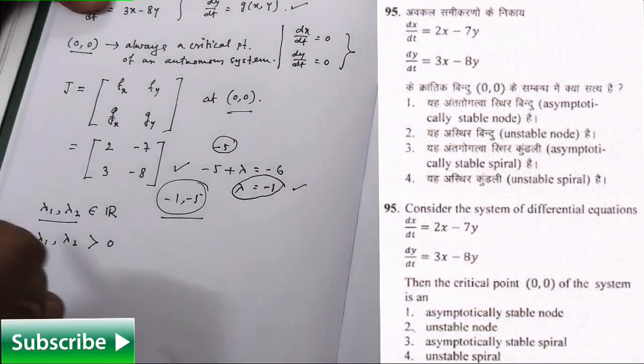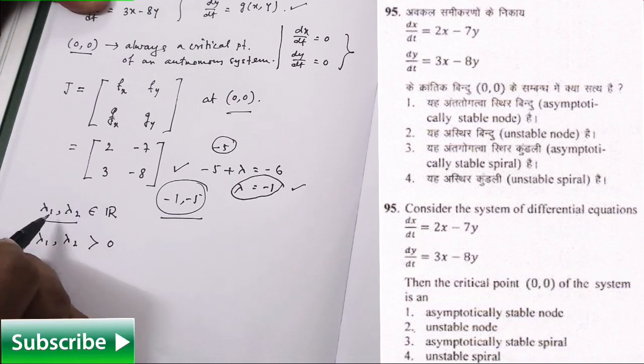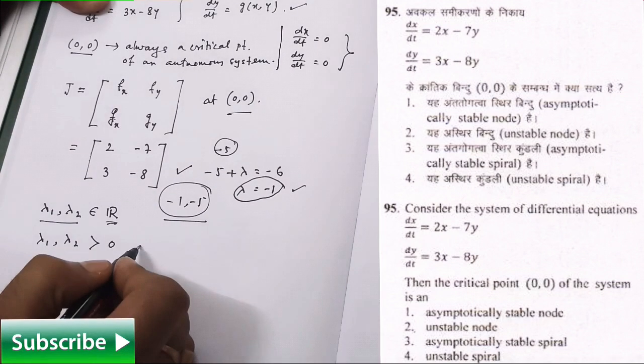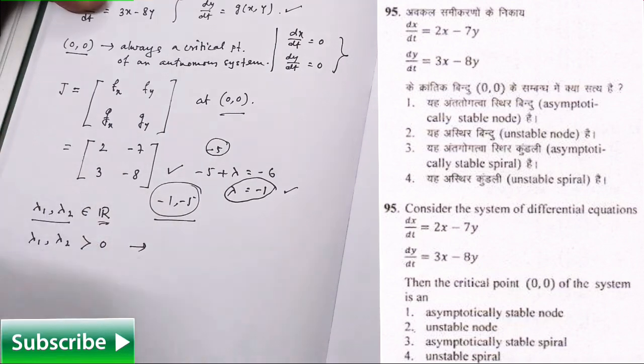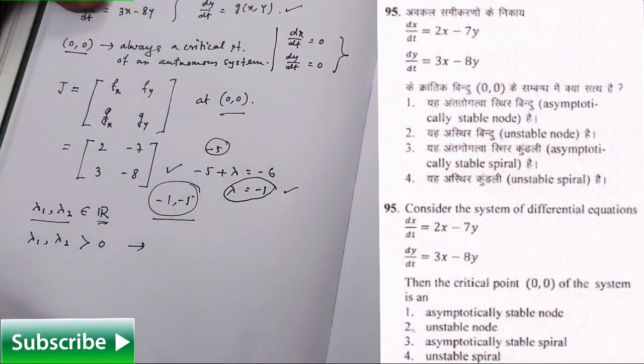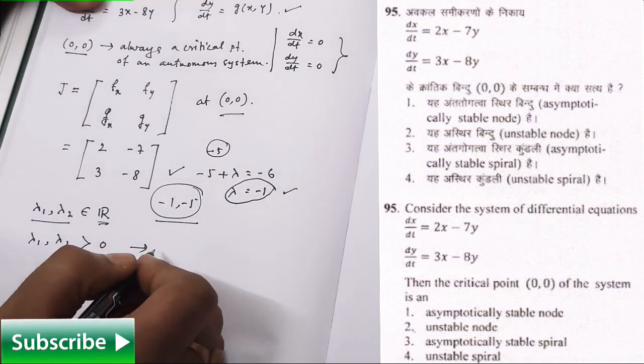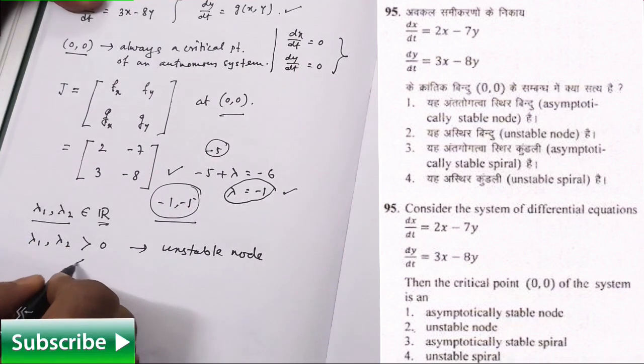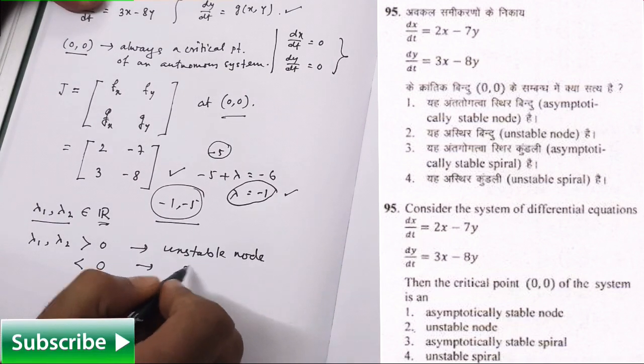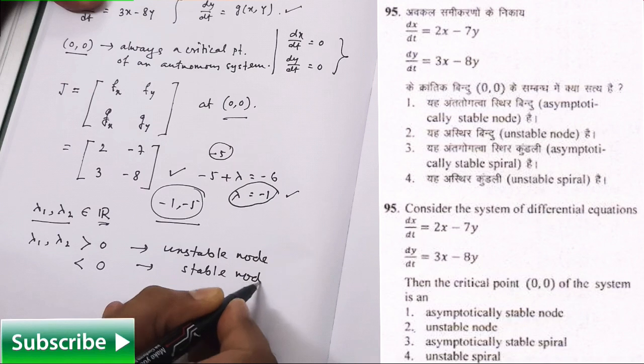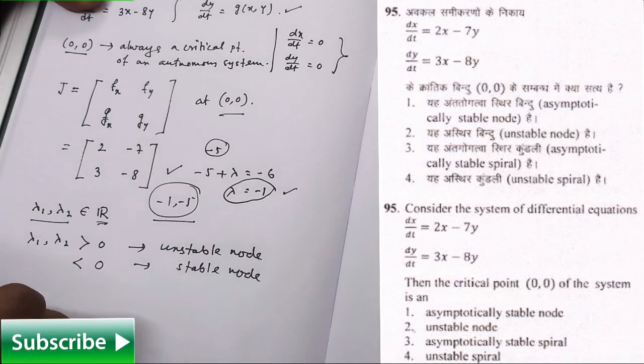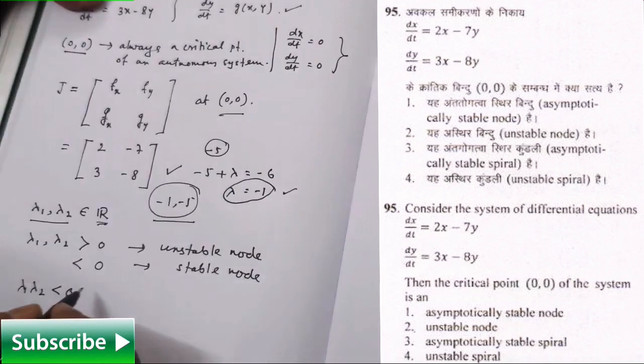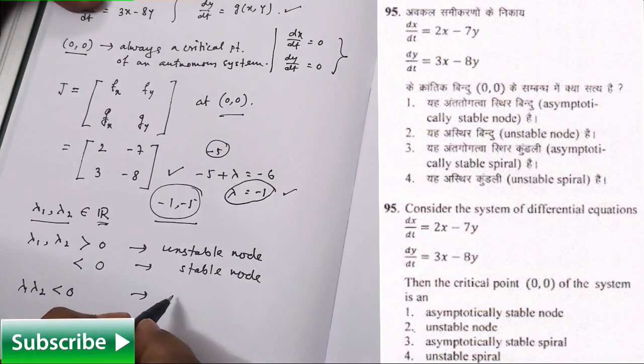Now we need to know whenever we are getting two eigenvalues of this kind of system and if they are belonging from R and both of them are positive, in that case that critical point, that means here we are considering (0,0), that critical point is your unstable node. If both of them are less than 0, in that case it will be stable node, fine. If their product, that means one of them is positive and another one is negative, if their product is less than 0, in that case that will lead to saddle point.